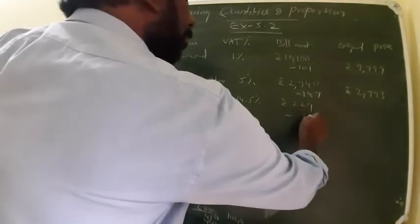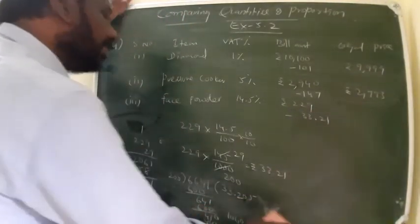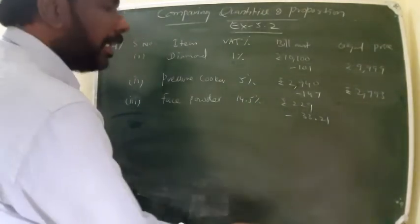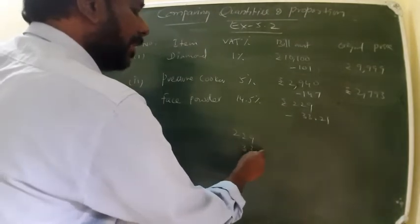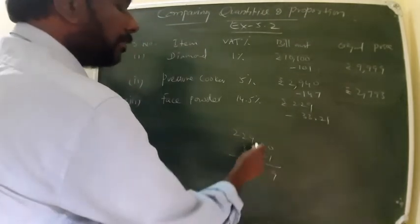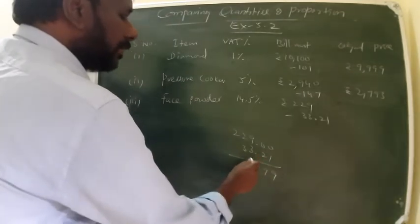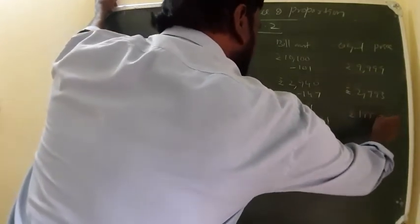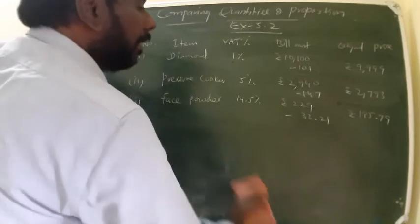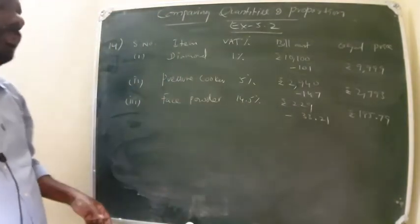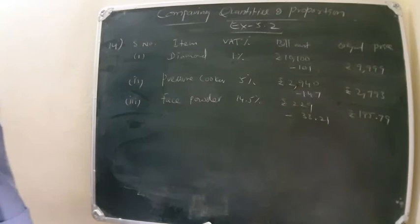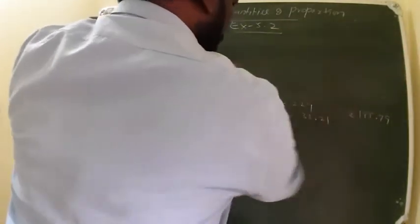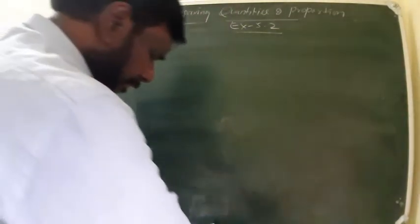So Rs. 33.21 paise, this is the VAT on this face powder. Now you can subtract 229 minus 33.21. Keep zeros: 9, 7, 5, 9, 1. So original price is Rs. 195.79 paise. Including VAT you will get Rs. 229 approximately. So like that you have to do this problem. The 14th sum is completed.